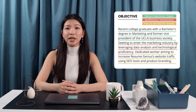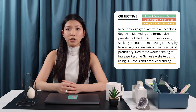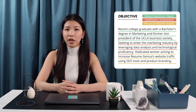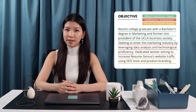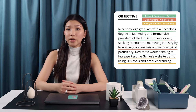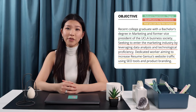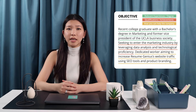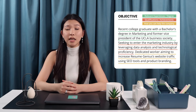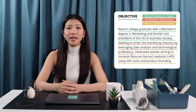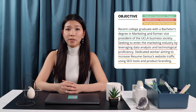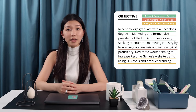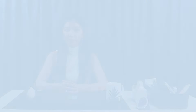To write these three sentences better, check the job description and pick out keywords to include. If the job you're applying to mentions SEO tools and marketing strategies, put those words in like this: 'Recent college graduate with a bachelor's degree in marketing and former vice president of the UCLA Business Society. Seeking to enter the marketing industry by leveraging data analysis and technological proficiency. Dedicated worker aiming to increase Resume Genius's website traffic using SEO tools and product branding.'